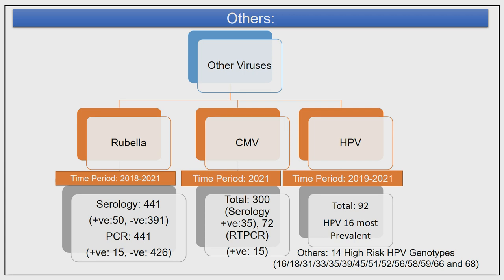For other viruses: we have a Congenital Rubella Syndrome project — 441 serological tests done with 50 positives, and 115 PCR positives. For cytomegalovirus infection, serology showed 35 positives and PCR 15 positives. For Human Papillomavirus (HPV), a pilot project from 2019 to 2021 enrolled 92 patients — the most prevalent genotype was HPV-16, and our real-time PCR can detect 14 high-risk genotypes of HPV.